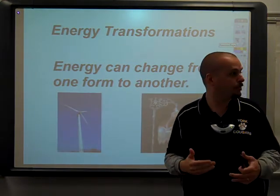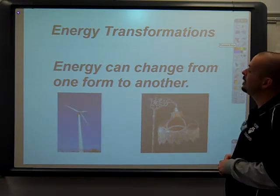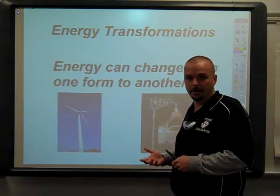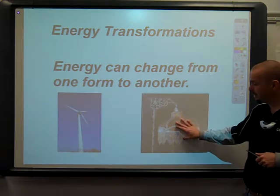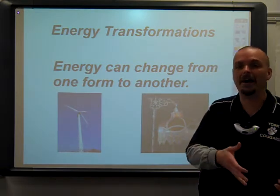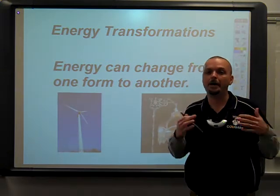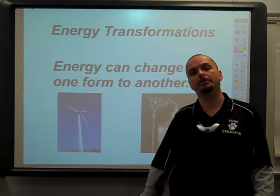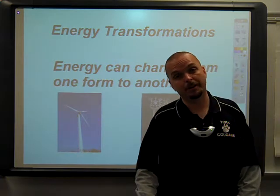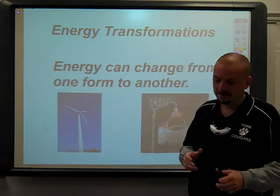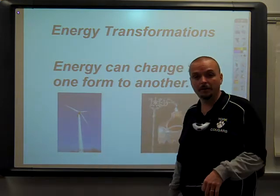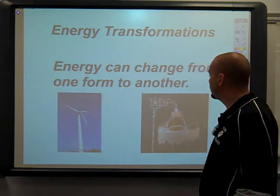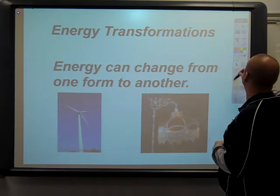Energy can transform from one form to another — it can start off as one thing and end up something else altogether. A windmill takes the mechanical energy of moving wind and turns it into electrical energy. A lamp takes electrical energy in and puts light and heat out. When you're eating a hamburger at lunch, think about all the transformations that energy has gone through: it started as light from the sun, got turned into chemical energy by a plant, a cow ate that grass and turned that chemical energy into other chemical energy and heat, and now we eat it and turn it into heat and motion. All kinds of transformations take place around us all the time.